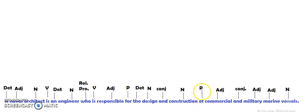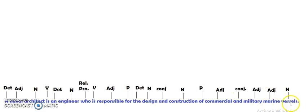'Construction' is a noun. 'Of' is a preposition. 'Commercial' is an adjective. 'And' is a conjunction. 'Military' is an adjective. 'Marine' is an adjective. And 'vessels' is a noun.